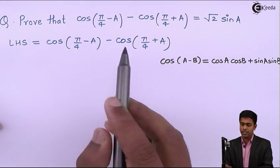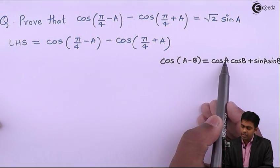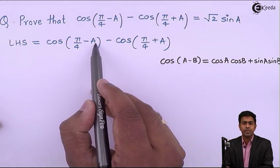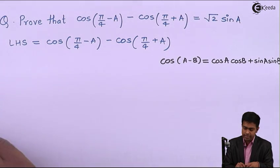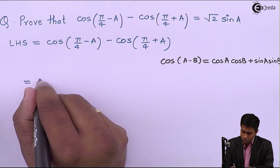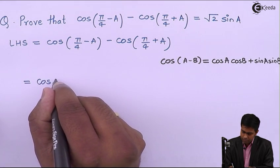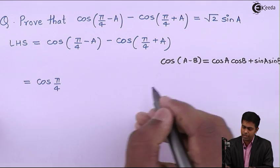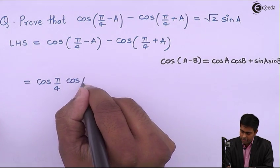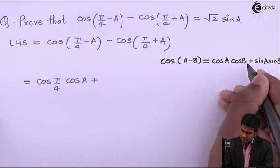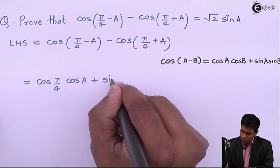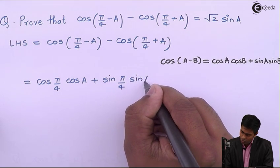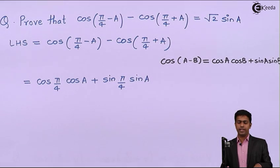So A is π/4 and B is A, so here we will get it is equal to cos(π/4) cos A plus sin(π/4) sin A. We got this value for this first term.